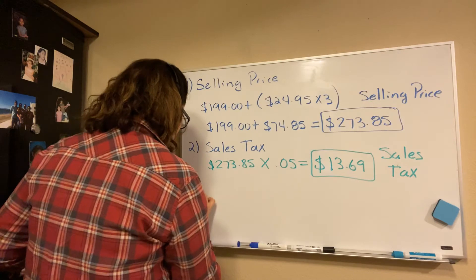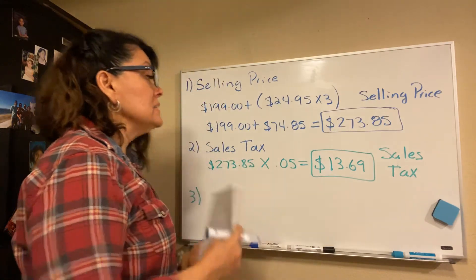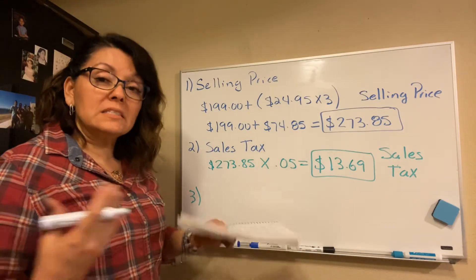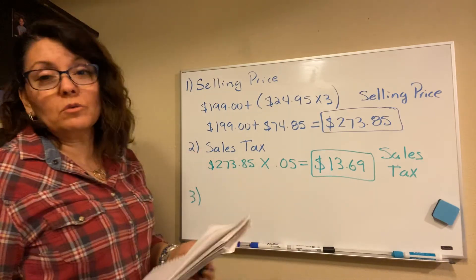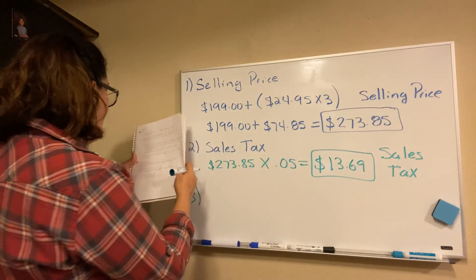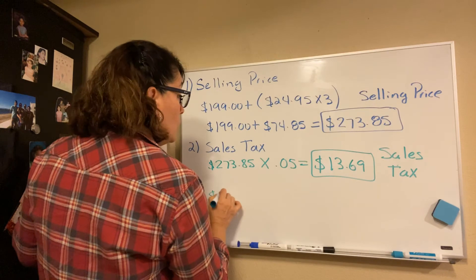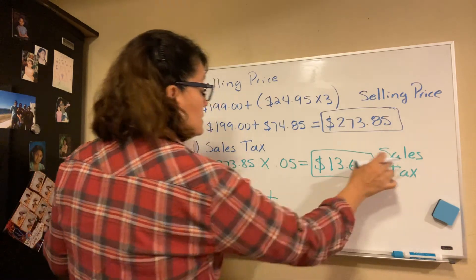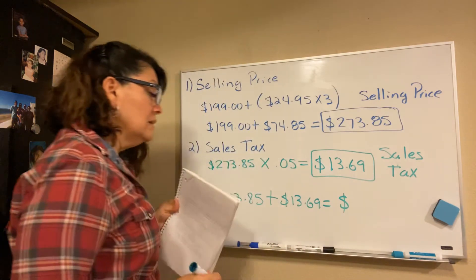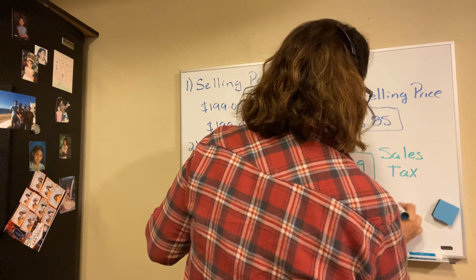Now, very importantly, we have the selling price and the sales tax, and we need to add them together. The total purchase price equals $273.85 plus $13.69, which means that person ends up paying $287.54.